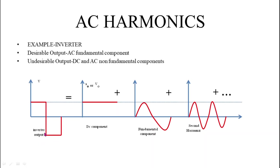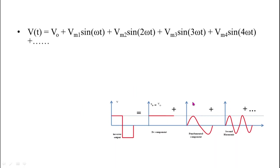This rectangular waveform can be represented as per Fourier series. It is the sum of a DC component, the fundamental component, the second harmonic component, the third harmonic component, and so on. The only desirable component is the fundamental component; the remaining components — DC, second harmonic, third harmonic, and so on — are all undesirable. We will now write the Fourier series representation of the output voltage: V₀(t) = V₀ + Vm1·sin(ωt) + Vm2·sin(2ωt) + Vm3·sin(3ωt) + ...